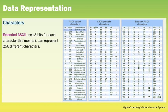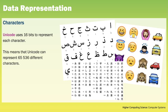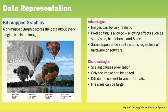From National 5 you will recall that characters can also be represented in binary. Characters are usually grouped together in a character set, which includes alphanumerical characters, symbols and control characters. The character set discussed at National 5 is extended ASCII, which uses 8 bits per character and can represent 256 different characters. However, there are more than 256 different characters across all languages in the world, so this is where Unicode comes in. Unicode uses 16 bits to represent each character, allowing it to represent 65,536 different characters including Arabic, Japanese and many other languages, as well as emojis.